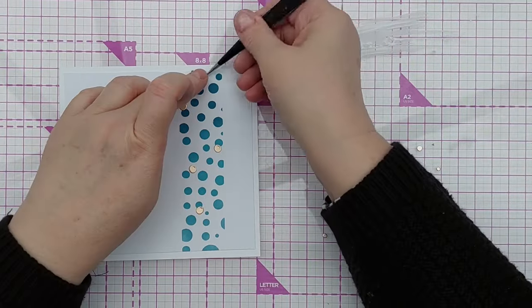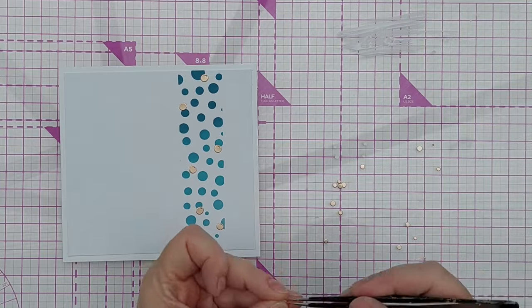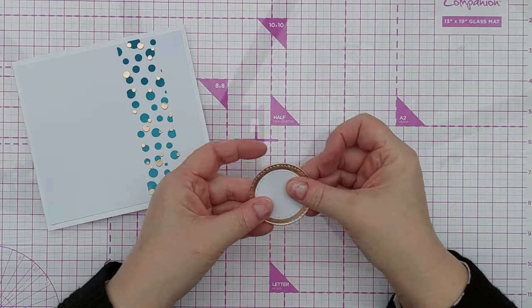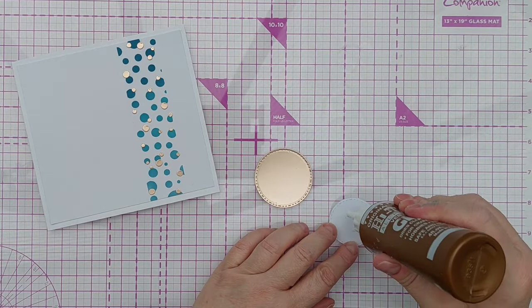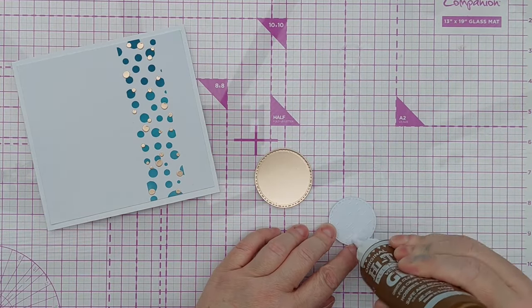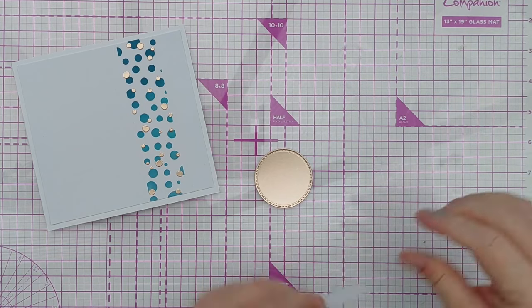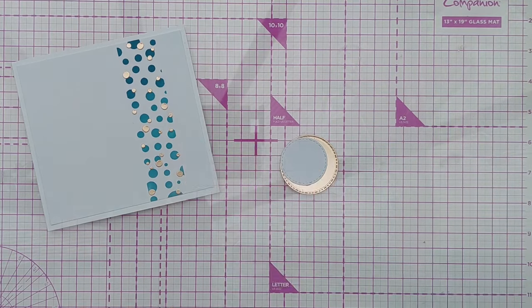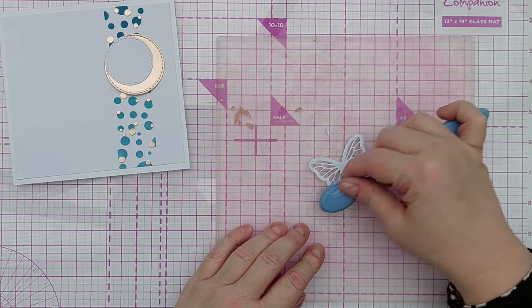Next I used some stitched circle dies to cut out a large rose gold circle and a smaller white circle. Then I glued those together, slightly offset, just for a bit of interest. This is going to provide the landing spot for my focal image, which is going to be a butterfly.